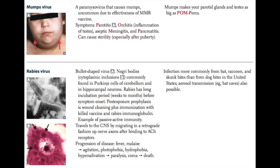The mumps virus is another paramyxovirus. Symptomatically it includes parotitis, or swelling of the parotid gland; orchitis, which is inflammation of the testes; and aseptic meningitis. It can also cause sterility because of this orchitis, especially with infection after puberty. Remember: mumps makes your parotid glands and testes as big as pom-poms — POM: Parotitis, Orchitis, and aseptic Meningitis.